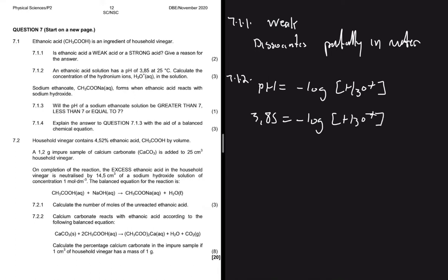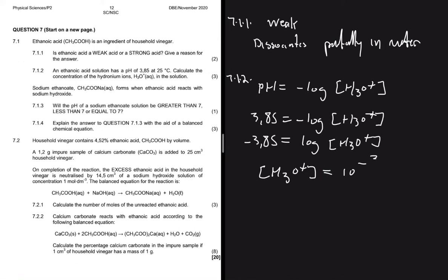From −3.85 = log[H₃O⁺], we get [H₃O⁺] = 10^(−3.85). Putting that into the calculator gives 1.41 × 10⁻⁴ mol·dm⁻³.